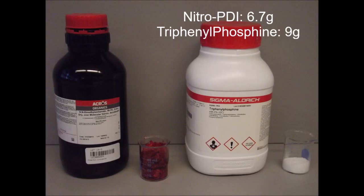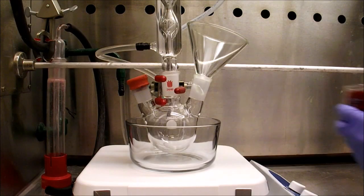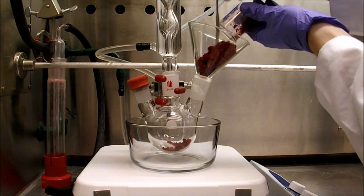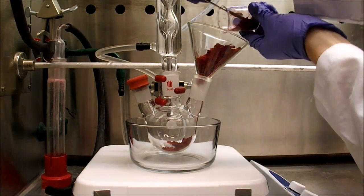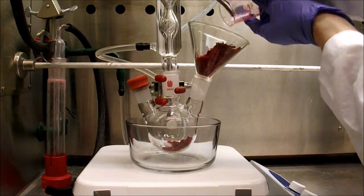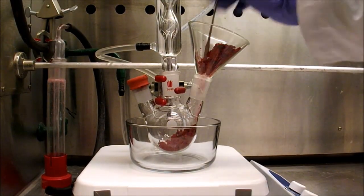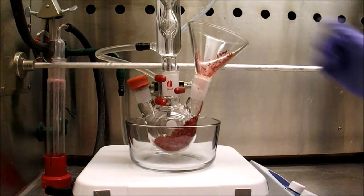For this reaction you will need nitro-PDI which we made in a previous video, triphenylphosphine, dimethylacetamide, as well as hexanes and dichloromethane for washings. To a three neck round bottom flask with a stir bar is added perylene diimide and triphenylphosphine. This reaction is done in an inert atmosphere of nitrogen and purging is more thoroughly done with a three neck flask instead of a normal round bottom flask.